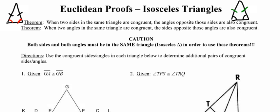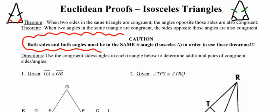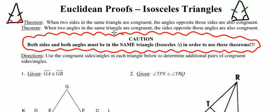One word of caution: in order to use this theorem, you have to have an isosceles triangle. Both of these congruent angles and sides have to be inside the same triangle — it's got to be an isosceles triangle in order for this to work.